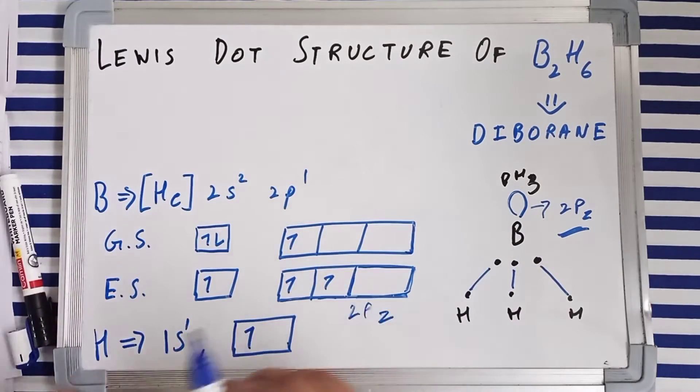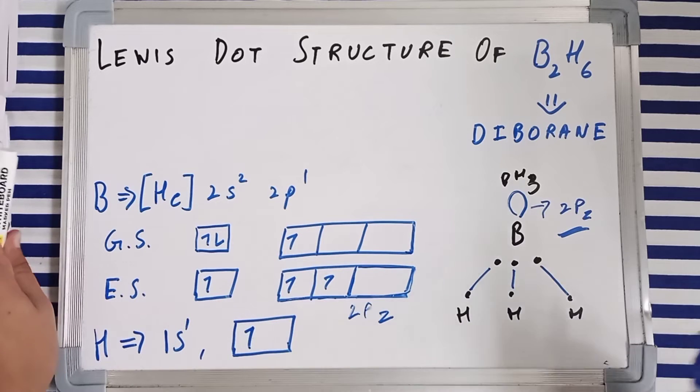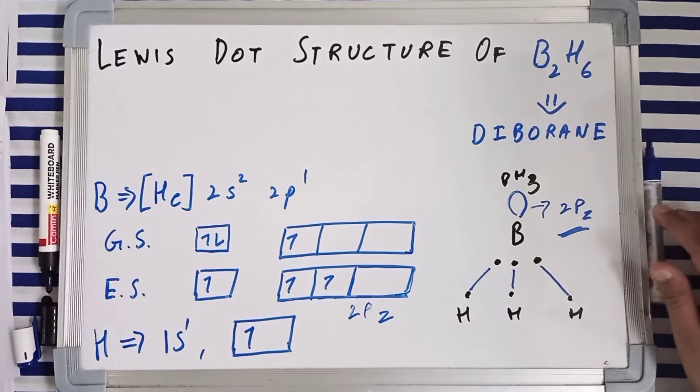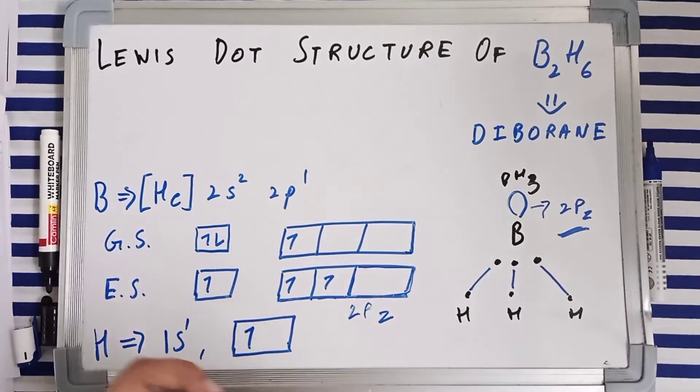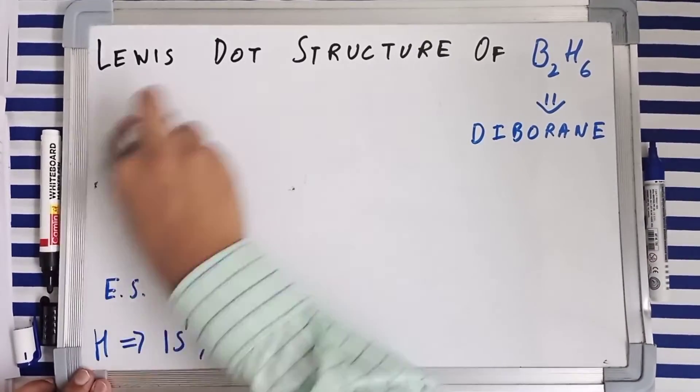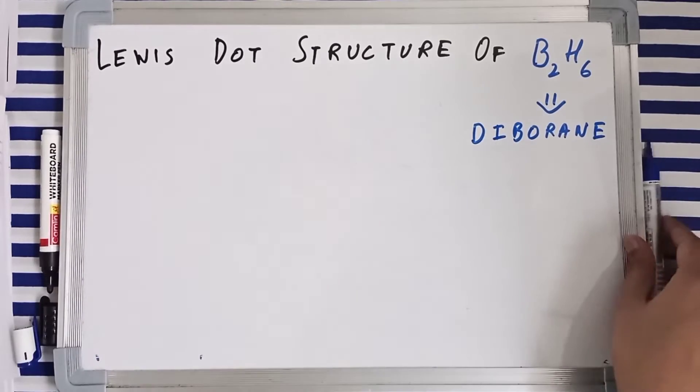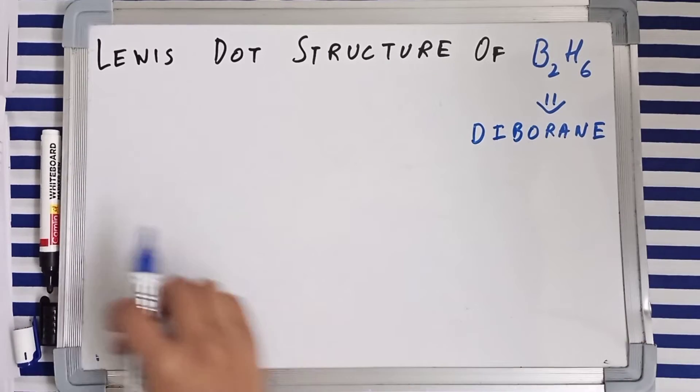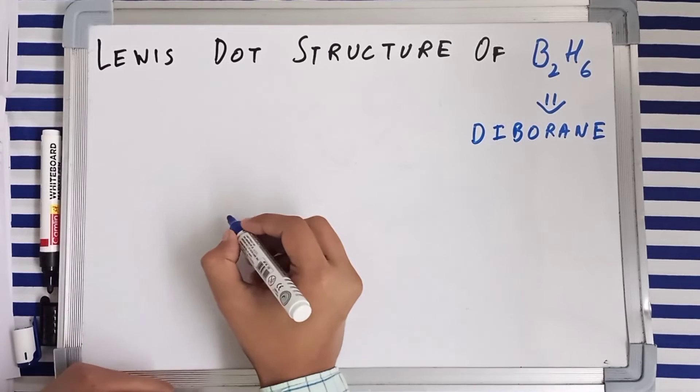Now let's get into the structural part of B2H6, diborane. So this is your structure of BH3. So as I said, in B2H6 you have got two borane molecules.